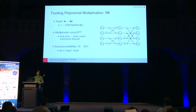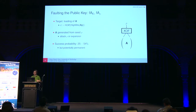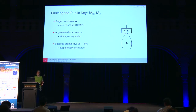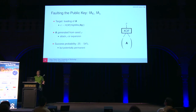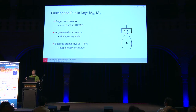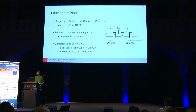We can also fault the public key — specifically the loading of A, which is not stored directly but generated from a seed. You can either attack the seed value directly or the extendable output function (XOF), giving success probabilities between 25% and 54%. Interestingly, faulting the seed could also be a permanent fault.